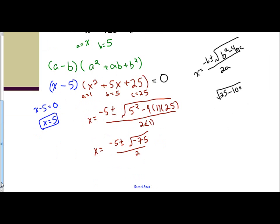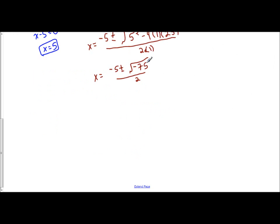So we still got to keep going. I have a negative inside of the square root. So I can take that out and make it an i. So negative 5 plus or minus i square root of 75 over 2.